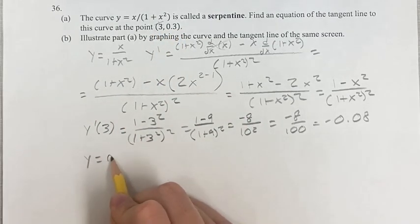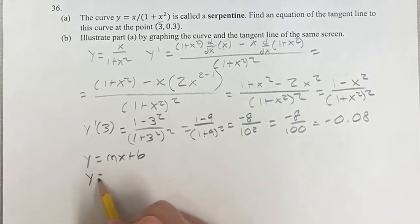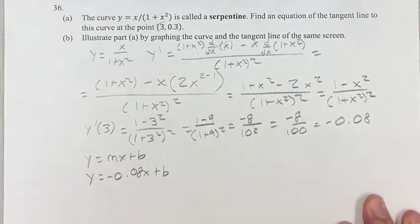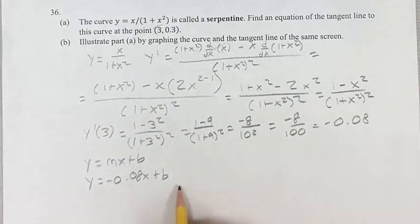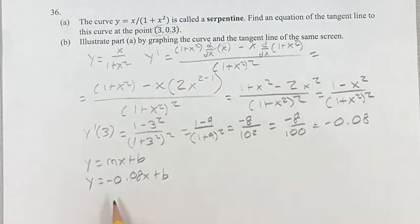We have the equation of the line y equals mx plus b. We now know the slope is negative 0.08, so we have negative 0.08x plus b. And we know that this equation is true for this point. Since this is the tangent point, we know it's going to be on this line.